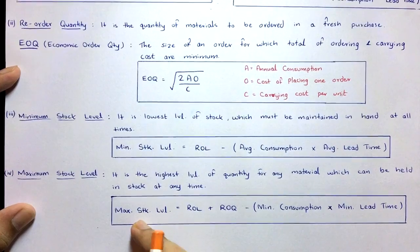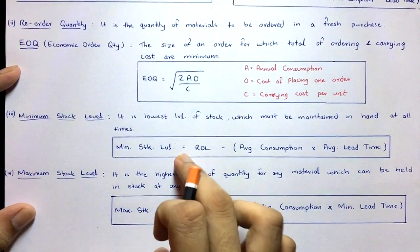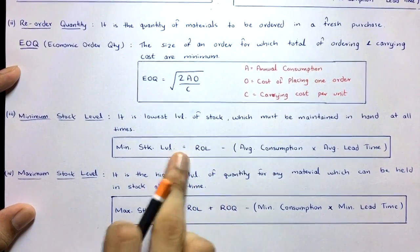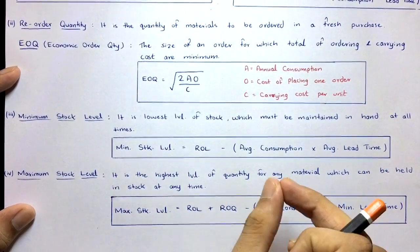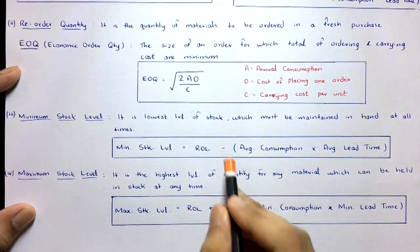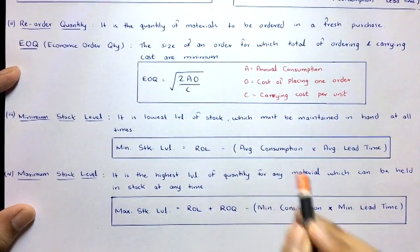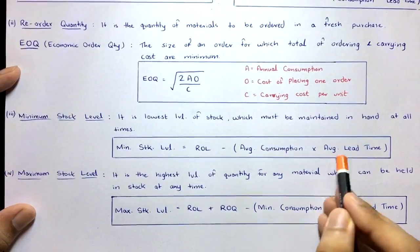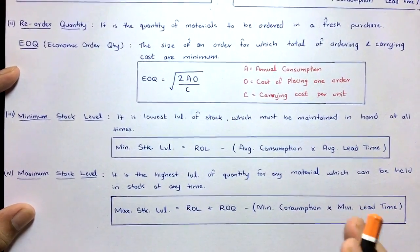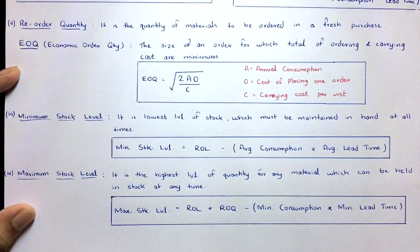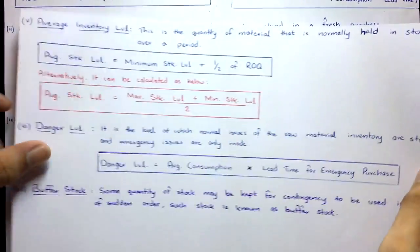To remember: the minimum stock level formula is shorter — it's just Reorder level minus something, and that something uses average consumption × average lead time. In the maximum formula, you use minimum consumption × minimum lead time. So: minimum formula uses average; maximum formula uses the opposite — minimum. That's all you need to remember.